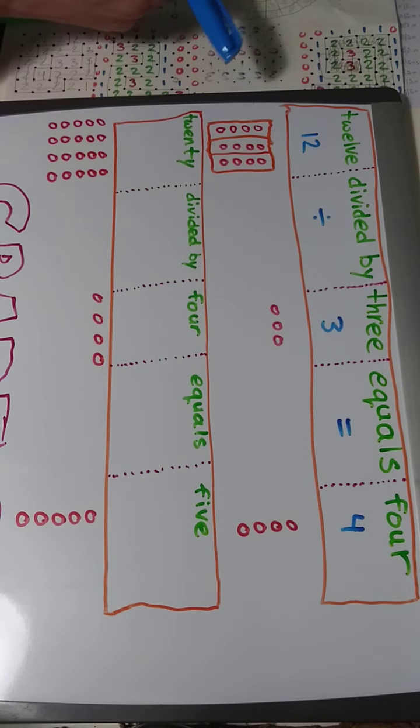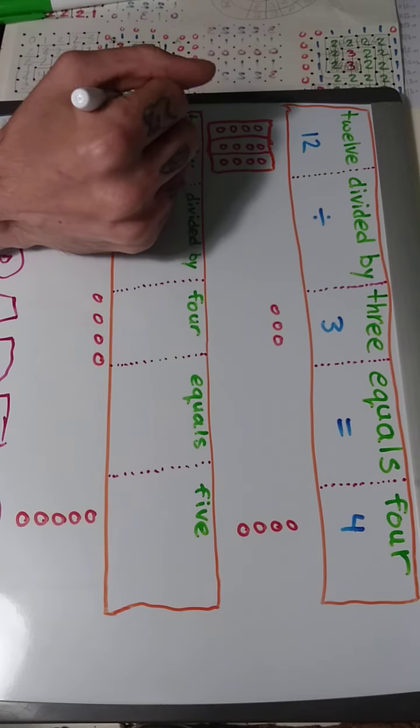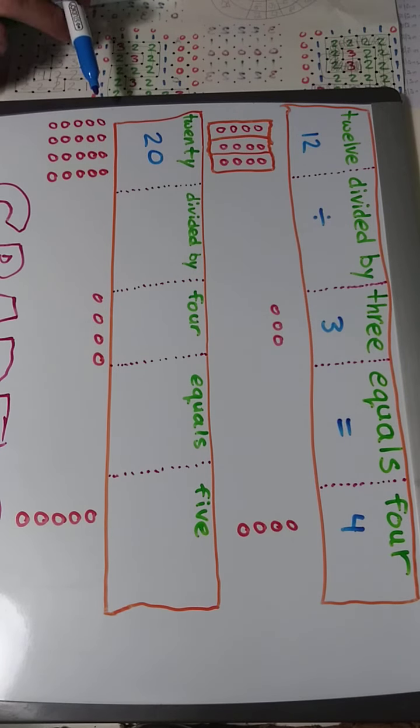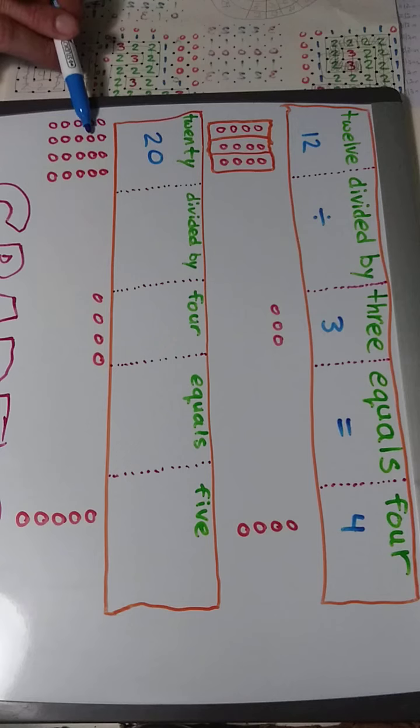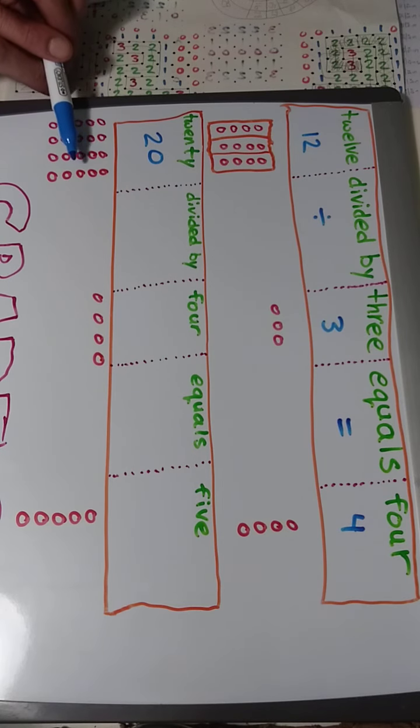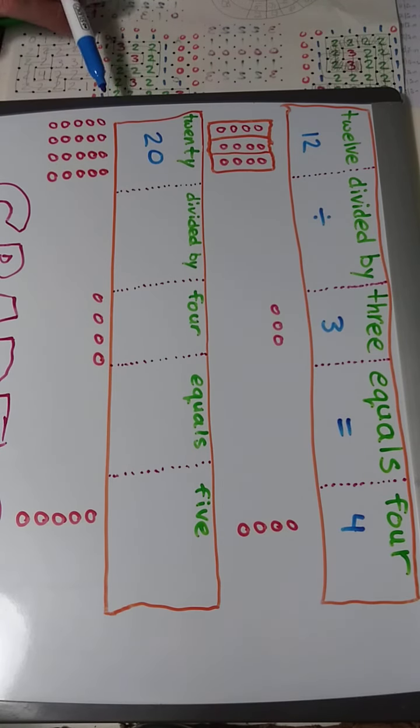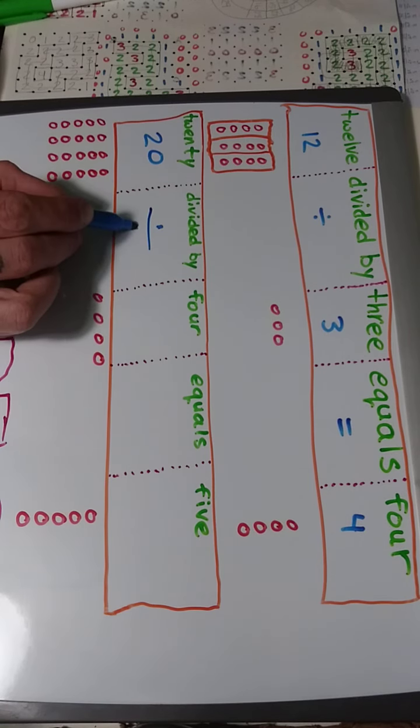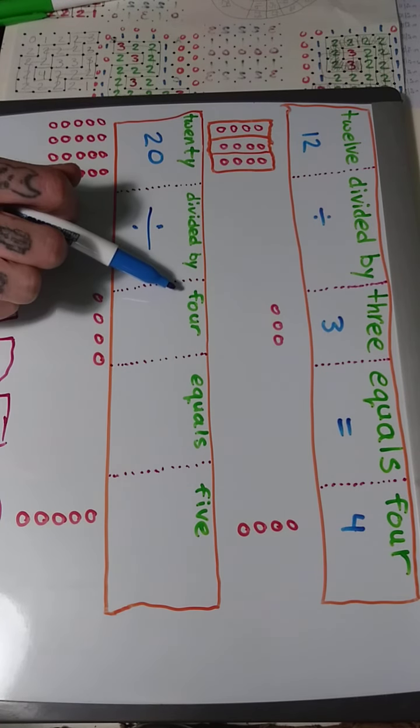So here we have 20. And then I've written out 1, 2, 3, 4, 5, 6, 7, 8, 9, 10, 11, 12, 13, 14, 15, 16, 17, 18, 19, 20. So there we have our 20 divided by 4.